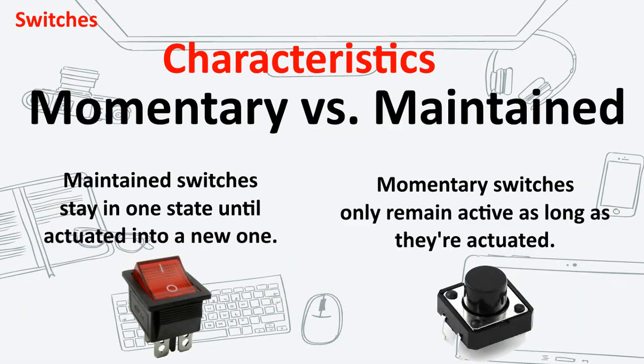Momentary or Maintain. All switches fall into one of these categories. Maintain switches stay in one state until actuated into a new one, and then remain in that state until actuated once again. An example is a light switch on your wall. Momentary switches only remain active as long as they are actuated. If not actuated, they remain in their off state. An example for this type is keys on the piano.